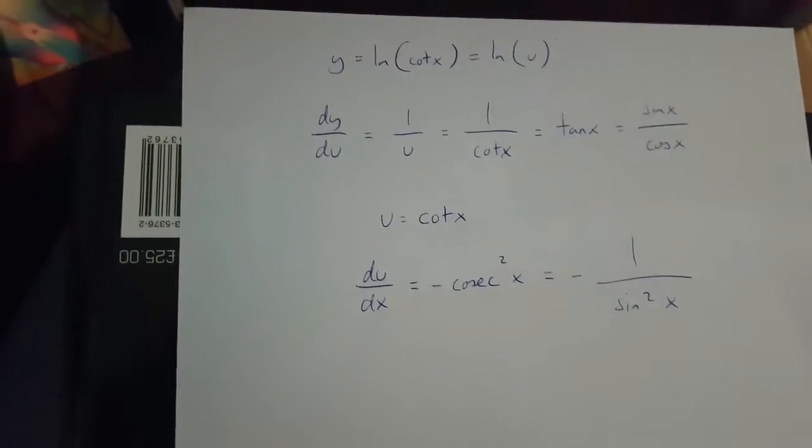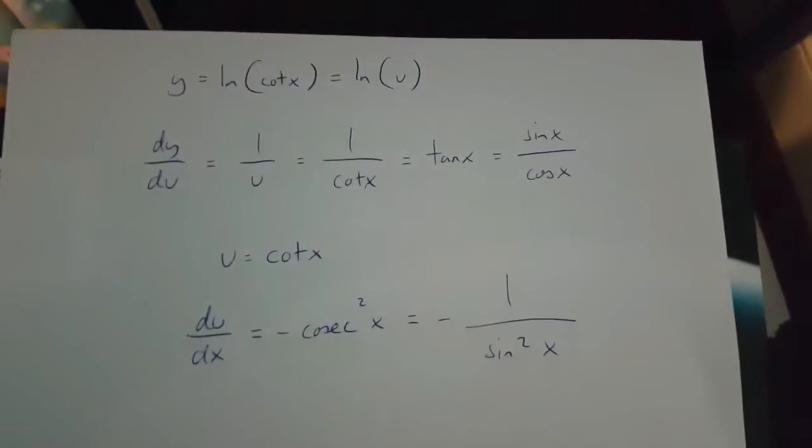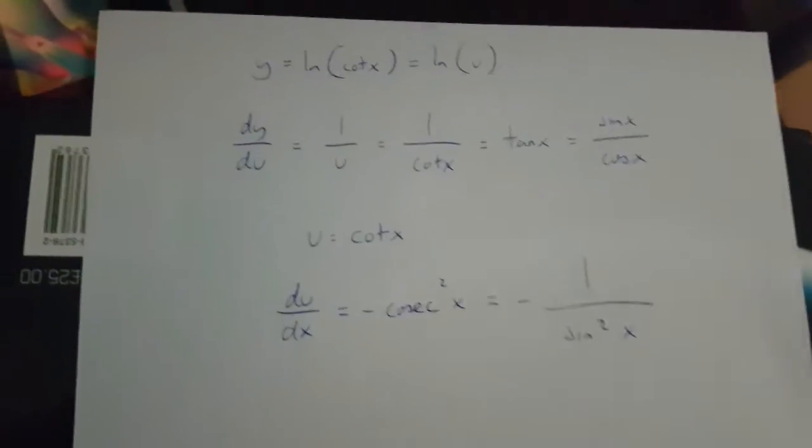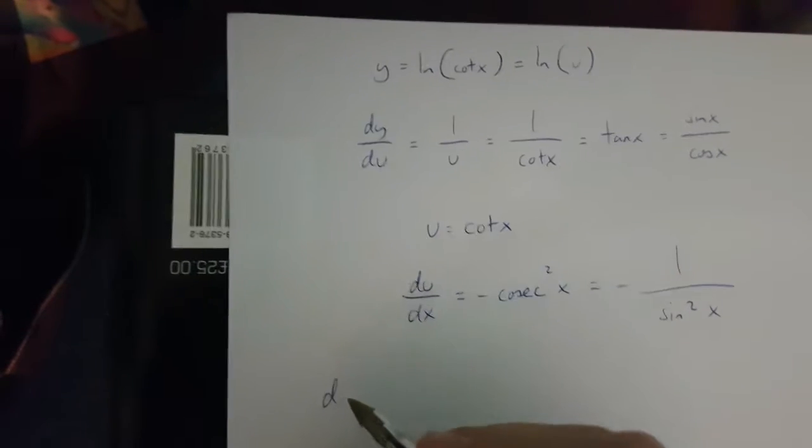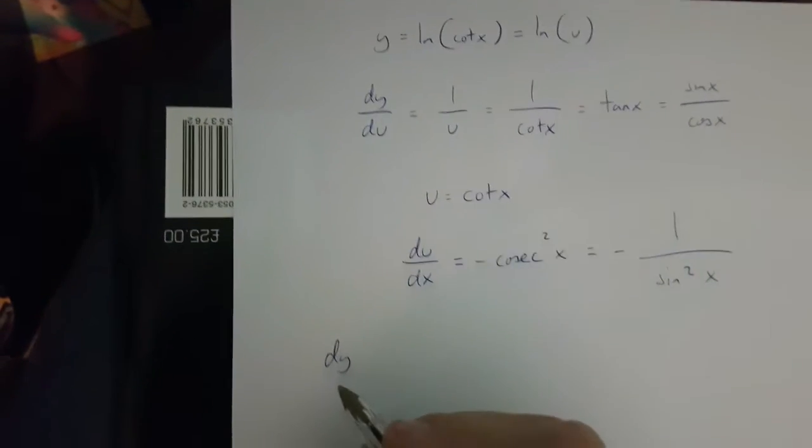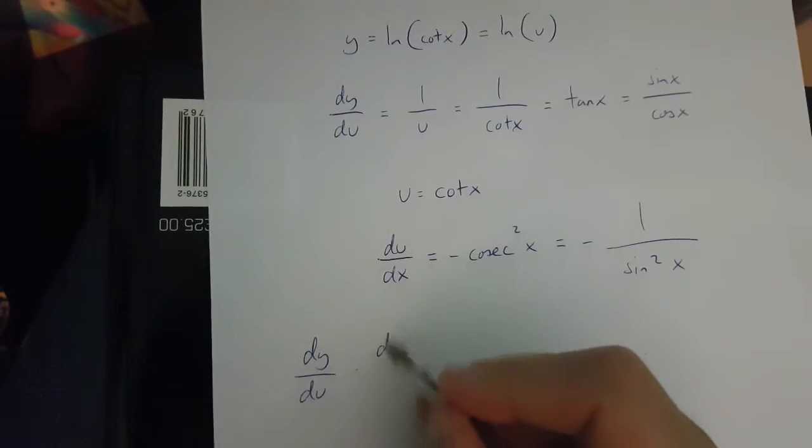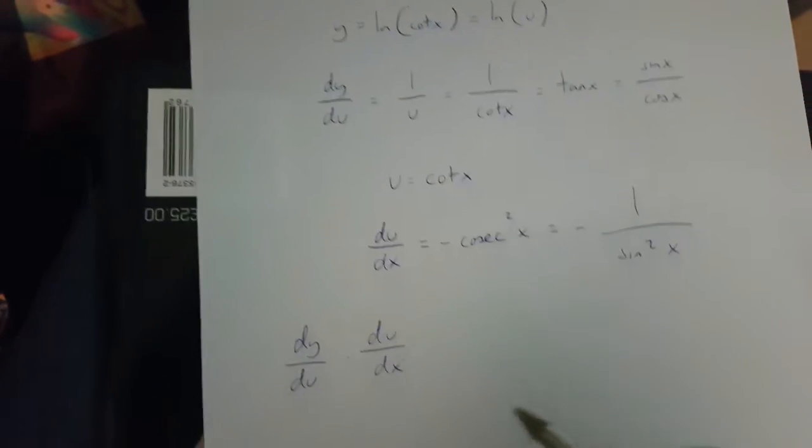Now using the chain rule, we're going to get dy over dx. So we're going to multiply dy over du by du over dx.